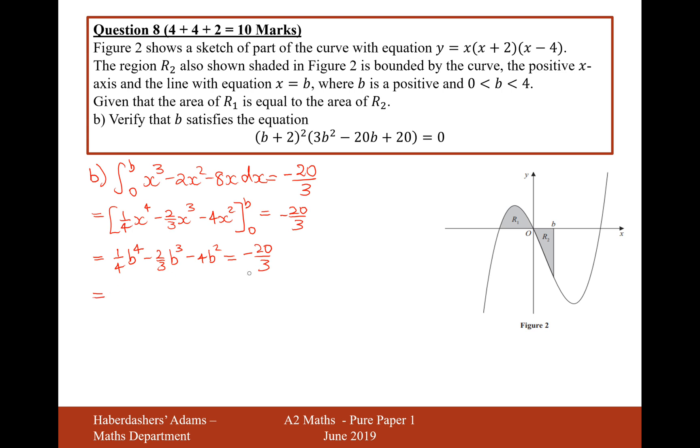Multiply by 12 all the way through to get rid of fractions. It'll be 3B to the power of 4 minus, multiply this by 12 which is times 8, so 8B cubed minus, this times 12 is 48B squared. If I add 80 to the other side, I get that equals 0.